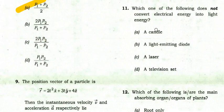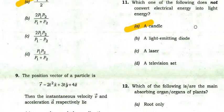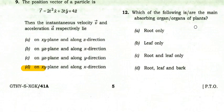Which of the following does not convert electrical energy into light energy? The answer is candle — it converts chemical energy into light energy, unlike a light emitting diode, laser, or television set, which all use electrical energy.